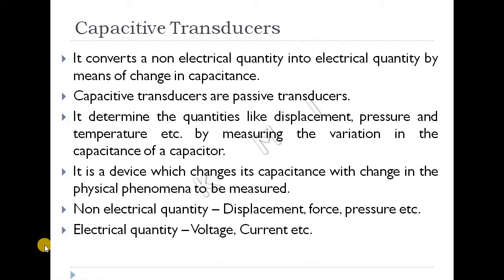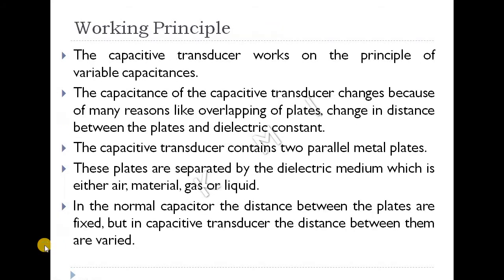We can convert the output to voltage or current by changing the capacitance of the capacitor — changing displacement or force. The capacitive transducer is a passive transducer.